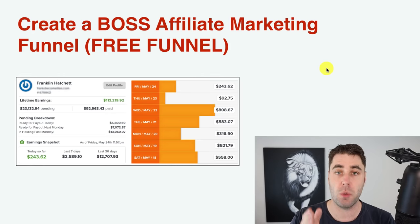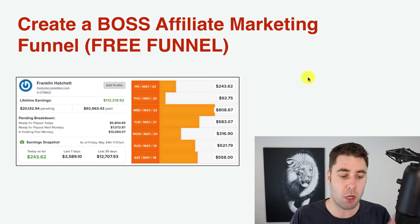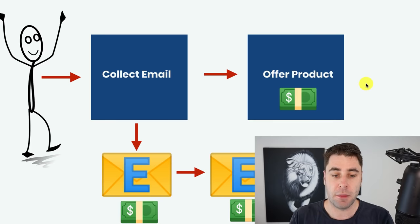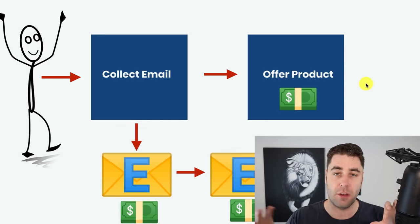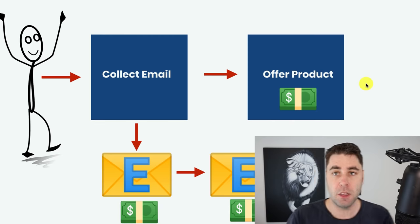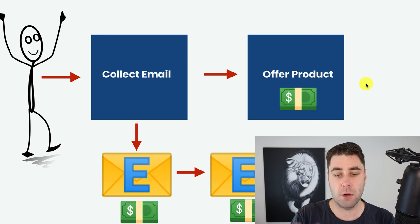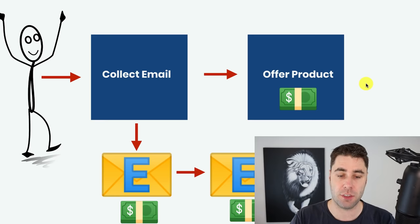Before we jump in, I want to explain what a funnel is and how it works, because a lot of people don't really understand — they seem to think a funnel is just two, three, four, or five pages. A funnel is where you take traffic and move it through a sequence of events, and at the end of — or inside — that sequence you make money. This can mean pages, emails, and stuff like that. In this video I'm going to show you how to collect an email, how to have an offer so you can make money, and how to set up two emails so you can make money with those as well.